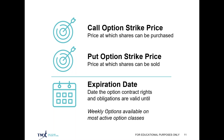For a call option, the strike price is the price at which the shares can be purchased. As the call option buyer, the strike price is the price at which you are able to purchase the shares. As a call option writer, the strike price is the price at which you will have to deliver the shares if the underlying security is trading at or above that particular price. For the put option buyer, the strike price represents the price at which the shares can be sold — if you're using a put option as protection, the strike price you purchased is the price at which you are able to sell those underlying shares regardless of how low they trade.